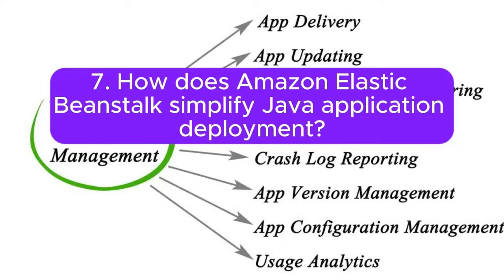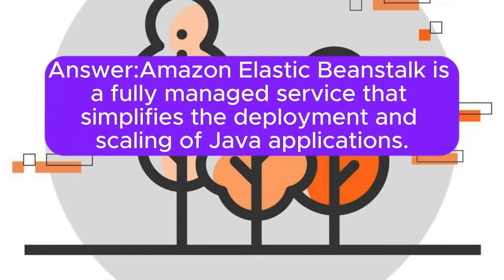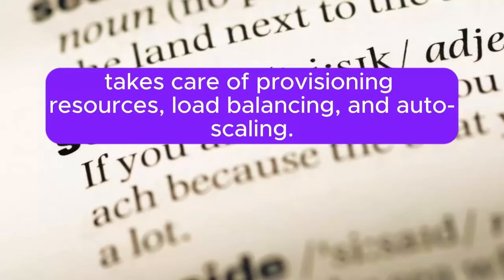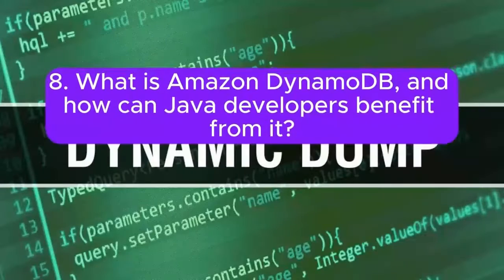Question 7: How does Amazon Elastic Beanstalk simplify Java application deployment? Amazon Elastic Beanstalk is a fully managed service that simplifies the deployment and scaling of Java applications. Developers can upload their Java application code, and Elastic Beanstalk takes care of provisioning resources, load balancing, and auto-scaling.